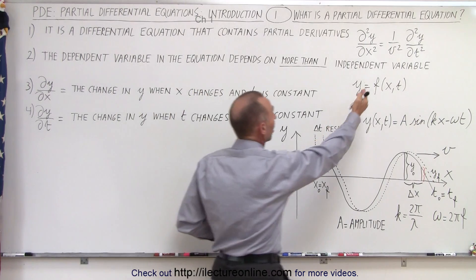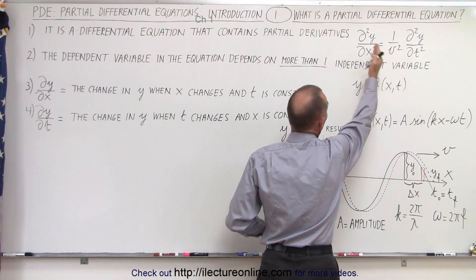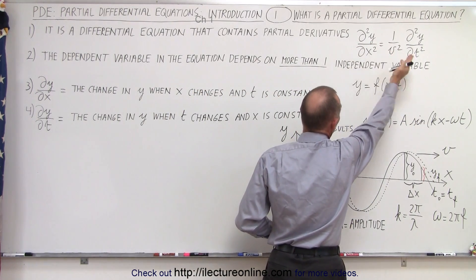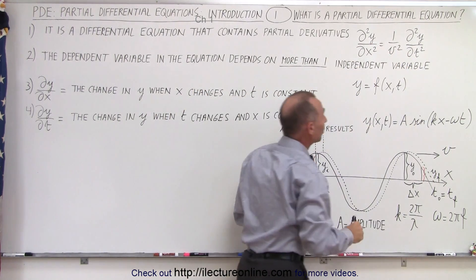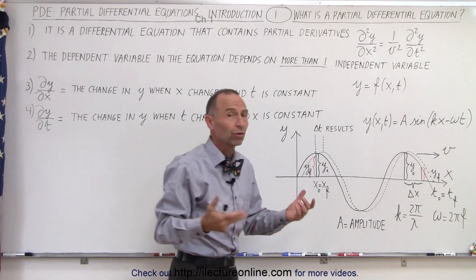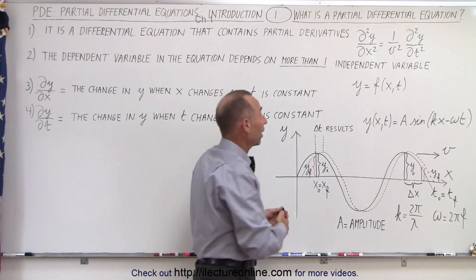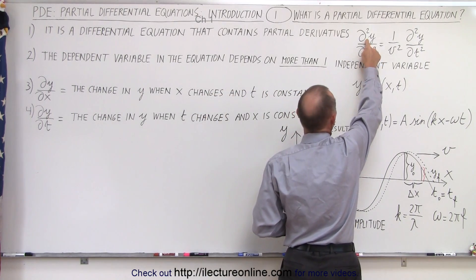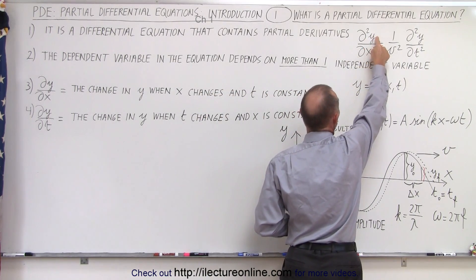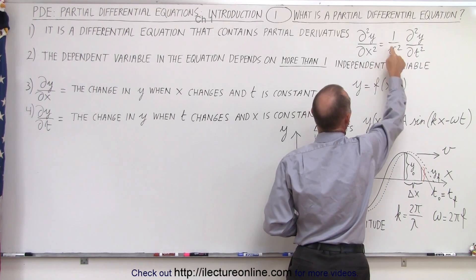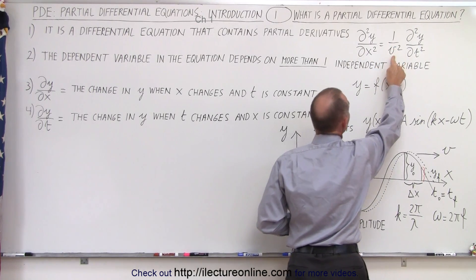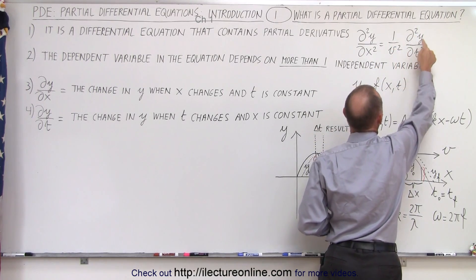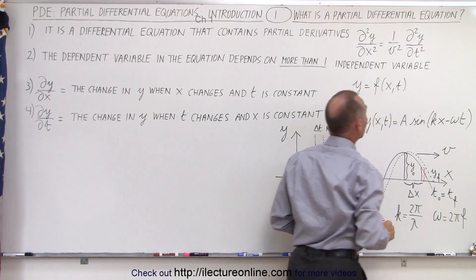Here's an example. An equation with a left side and a right side, and on both sides of the equation we have a partial derivative. It turns out we have the second partial derivative of y with respect to x equals 1 over v squared times the second partial derivative of y with respect to t.